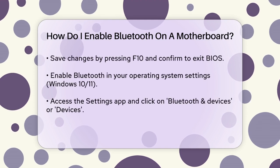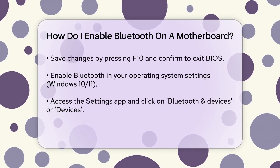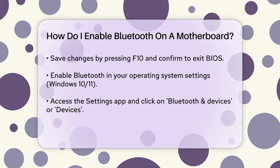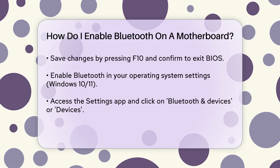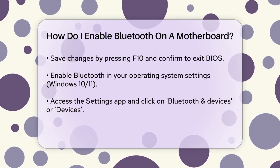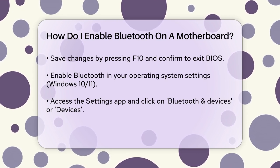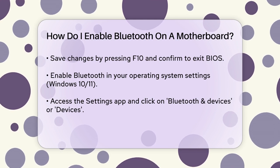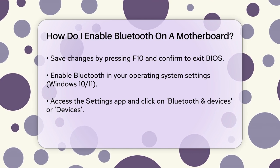Save your changes by pressing F10 and then confirm to exit the BIOS settings. After enabling Bluetooth in the BIOS, you'll need to ensure that Bluetooth is also enabled in your operating system. On Windows, go to the Settings app and click on Bluetooth and Devices in Windows 11, or Devices in Windows 10, and make sure Bluetooth is turned on.